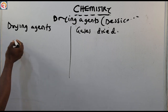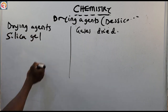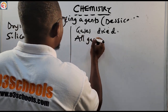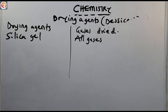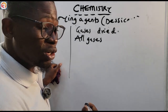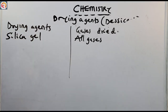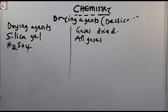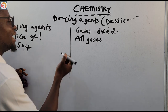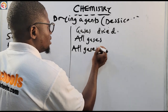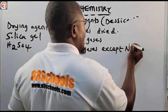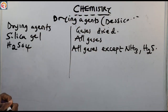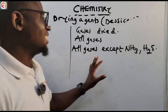The first drying agent we are going to look at is silica gel. Silica gel is a drying agent and it dries all gases. Also, H2SO4 dries all gases except ammonia and hydrogen sulfide.